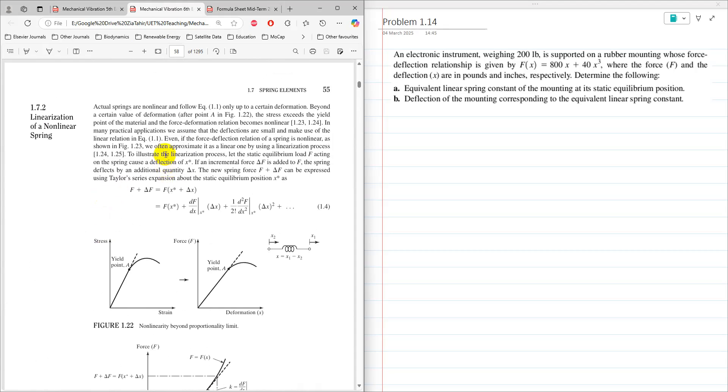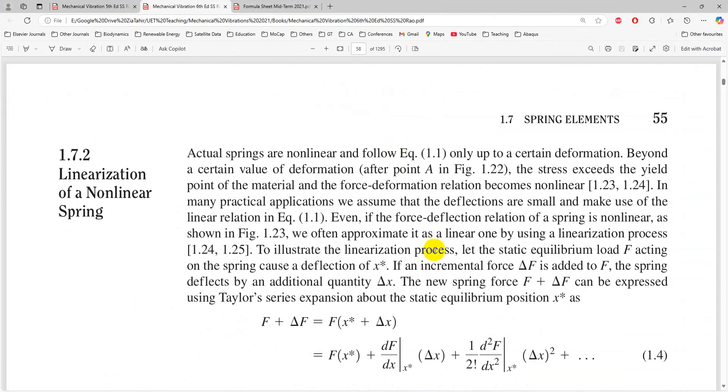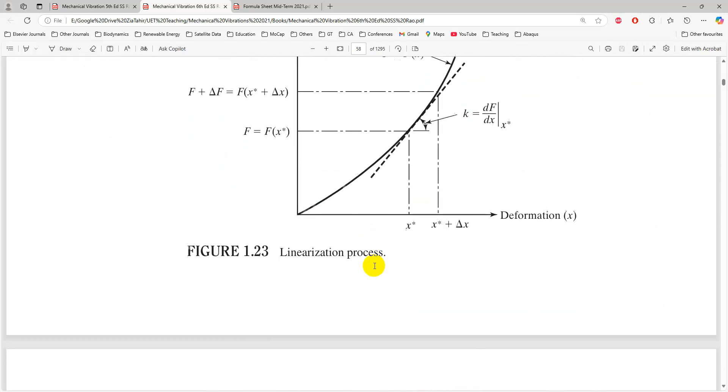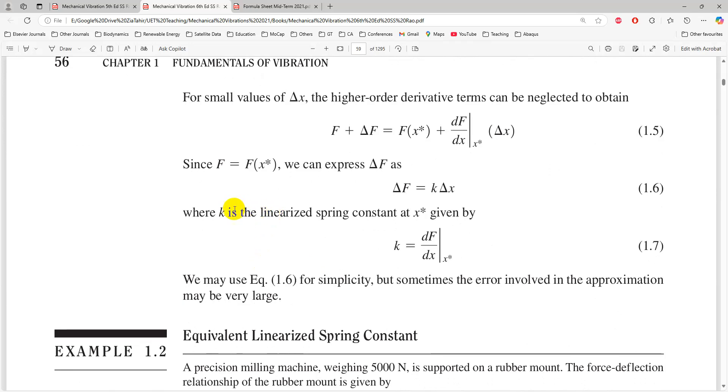When you have to solve this problem, we have to assume that static equilibrium of load acting on the spring causes a deflection of x*. From there we need to find static equilibrium under whatever is the load being applied, and then the equivalent spring stiffness for that linearized spring at x* is given by df/dx at x*.